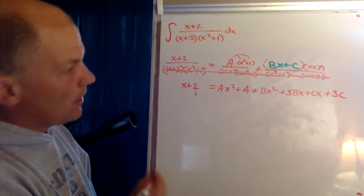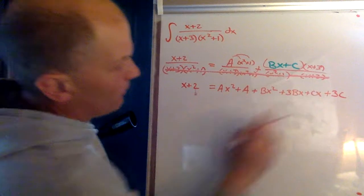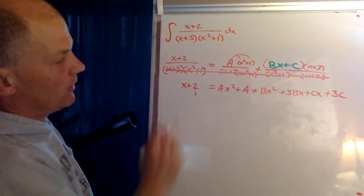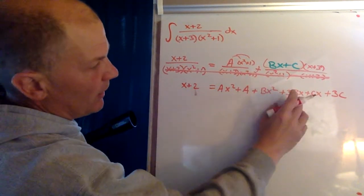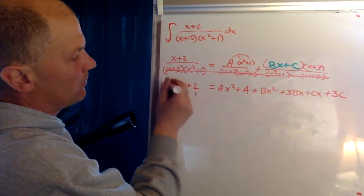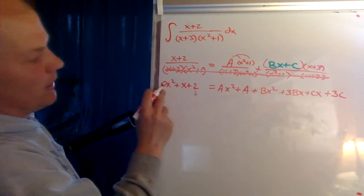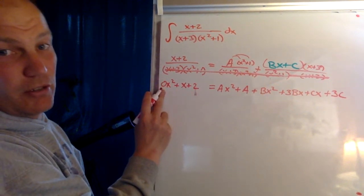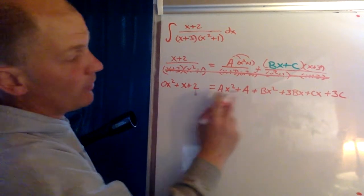Okay, so now I've got my three different constants over here and I've got an x squared term. So we should remember, in case you forgot, there's a zero x squared term here, so we can take care of our x squared terms.